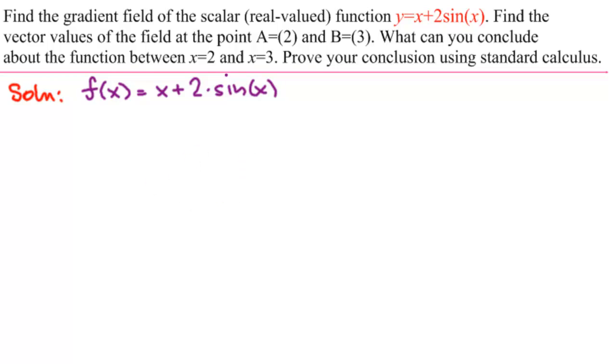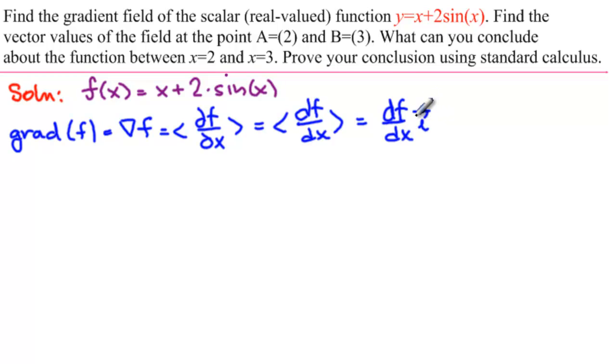And then we saw that the definition of the gradient of f, or del f, is vector. And then it was the partial derivative of f with respect to x, full stop, because we only have the one. So this would not be the partial, it would be the actual derivative of f with respect to x. Or if we write it in a standard vector format, it would be df dx times i. So that's what we're looking at here. That's going to be our gradient field.